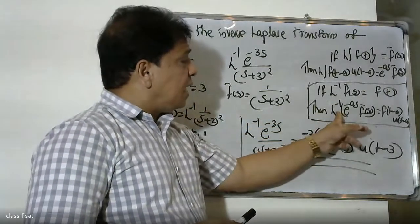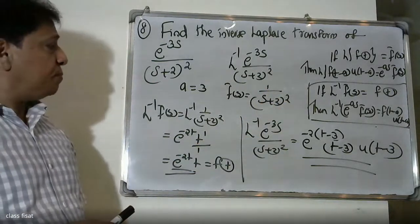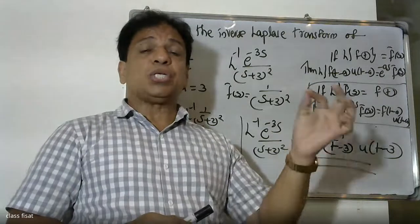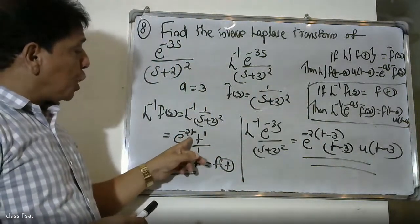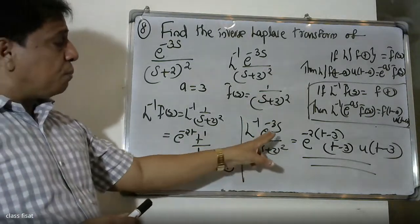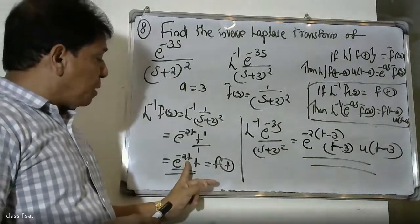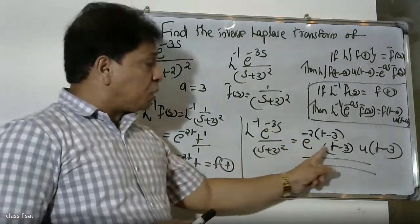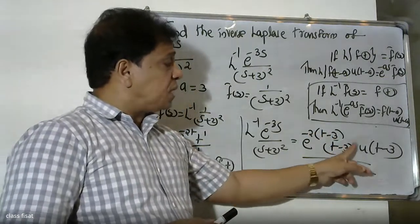Comparing with a equals 3 and F̄(s) equal to 1 by (s plus 2) squared, and since F(t) equals e raised to minus 2t into t, we apply the second shifting property to e raised to minus 3s by (s plus 2) squared. The answer is F(t minus a) into u(t minus a), giving e raised to minus 2(t minus 3) into (t minus 3) into u(t minus 3).